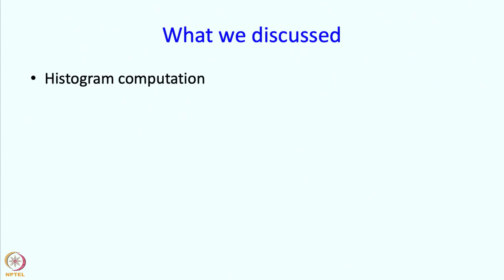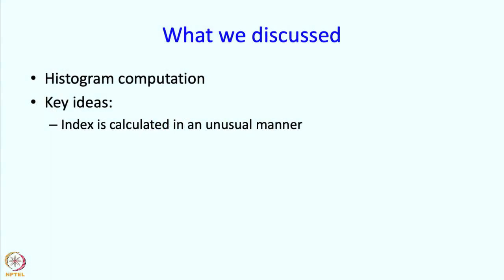What have we discussed? We discussed this idea of histogram computation, which is an important statistical operation. By looking at the histogram, you can get a rough sense of how people have done. In our histogram, there were no students getting marks in the range 0 through 29, and those zeros indicate that most students got good marks. The key ideas are that the index for accessing the array element is calculated in an unusual manner, and integer division plays an important role.